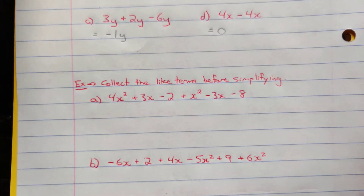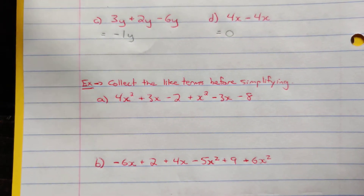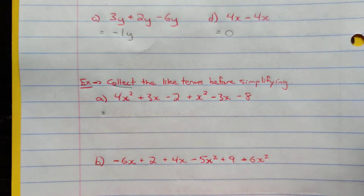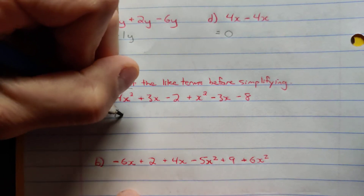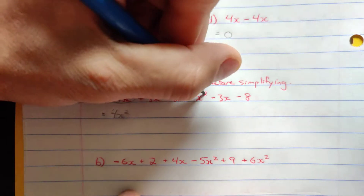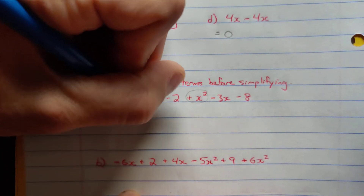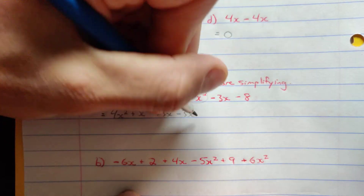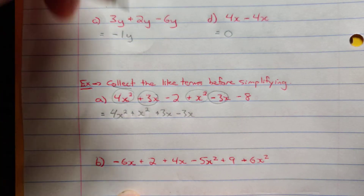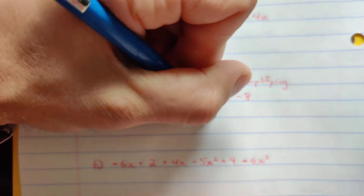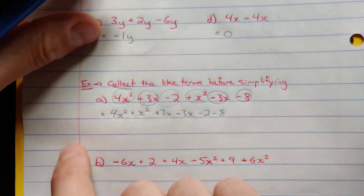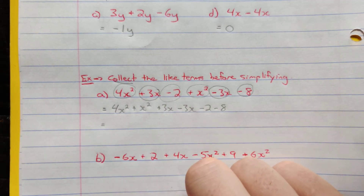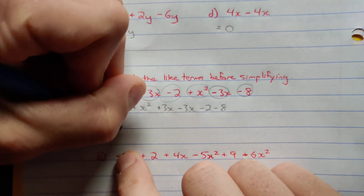The next set is more complicated as we have a mix of x squared terms, x terms, and constants. We'll collect the like terms by rewriting the expression. Starting with 4x squared, then plus x squared; then 3x plus negative 3x; then minus 2 and minus 8. Circling them as I go helps make sure I've used them all, especially as expressions get longer.